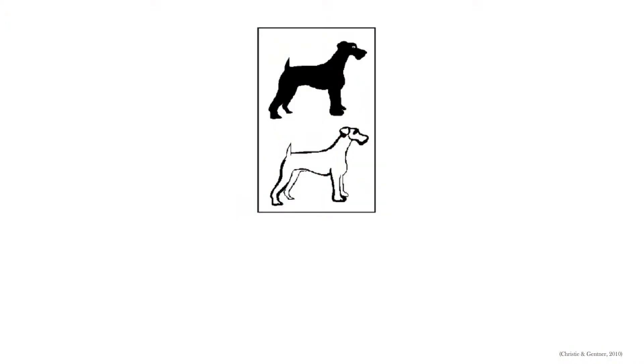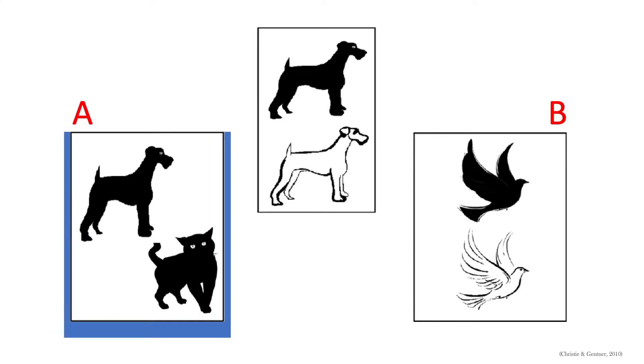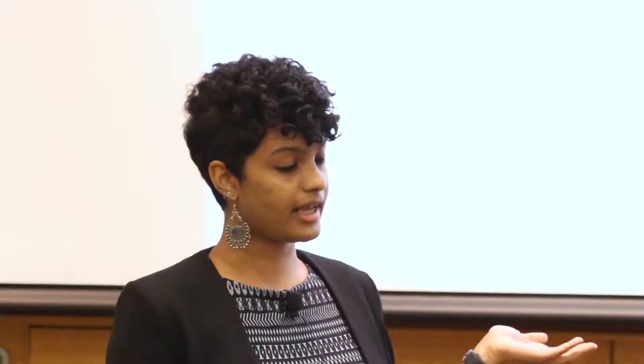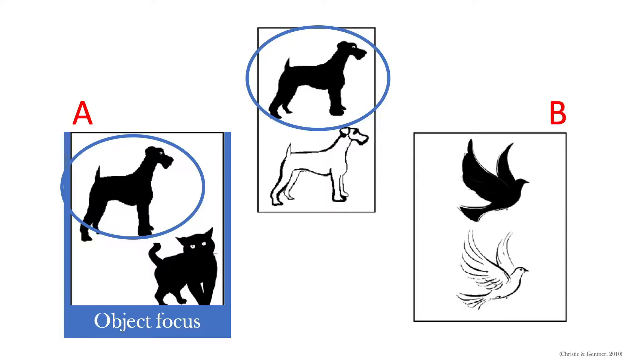They then gave the child two more cards and asked them to choose another card that was also a blicket. It turns out that when children are presented with just one example card, they were much more likely to choose card A since it contained the exact same object across both these cards. In this case, the black dog was a distractor and choosing card A was termed object focus.